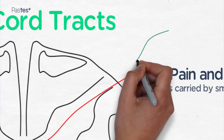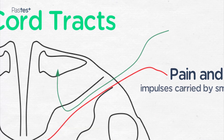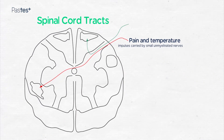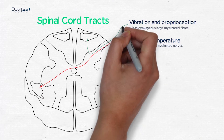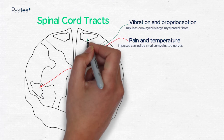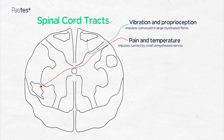The second tract system is to do with feelings of vibration and joint position sense. These impulses are conveyed in large myelinated nerve fibers to the spinal cord and upon entering through the dorsal root they immediately go to the dorsal columns and then ascend ipsilaterally. They reach the medial lemniscus in the brainstem, where at that point they decussate.